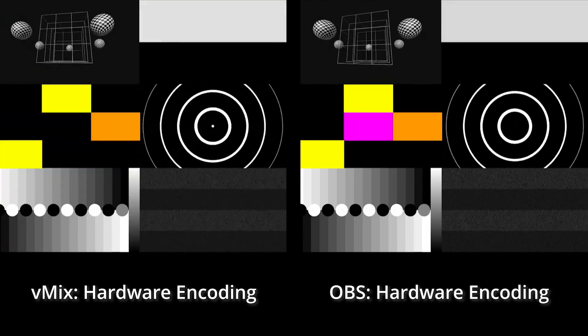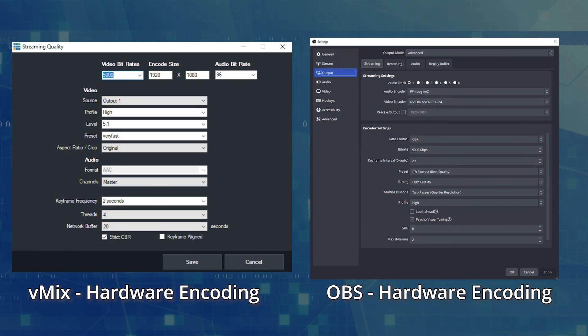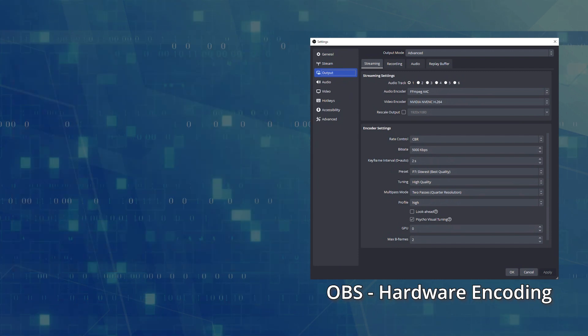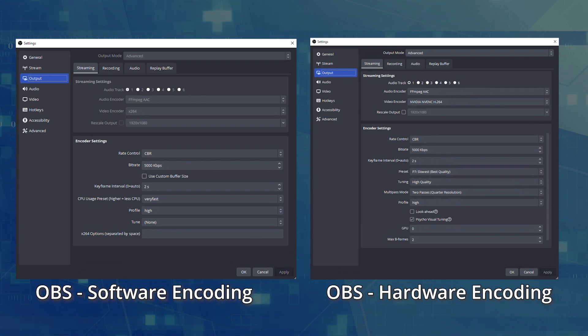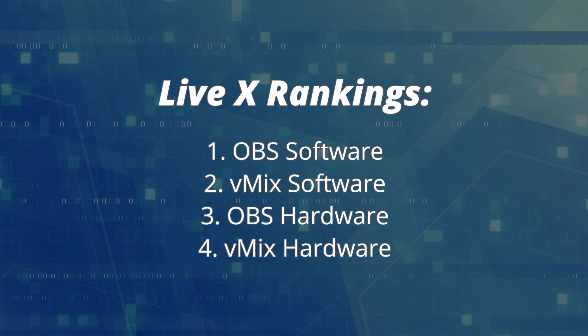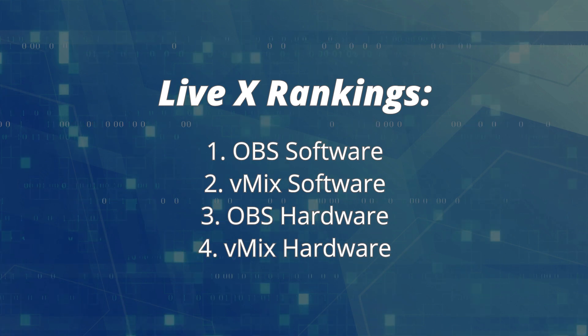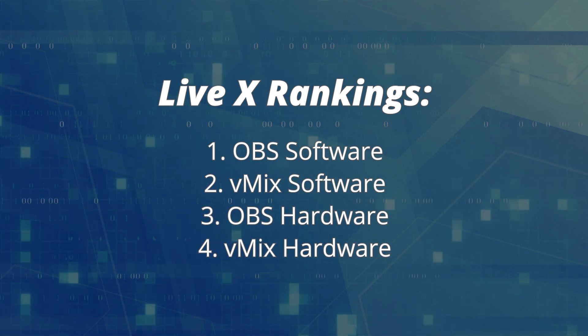It struggles with these fading color blocks on the top right. OBS looks better, and this is because I was able to tweak the NVENC encoding settings that vMix doesn't give me. For this test, I think OBS's tweaked hardware encoding looked almost as good as its vanilla software encoding most of the time, and you might notice no difference or even prefer hardware for your use case. Our viewers at LiveX put OBS software encoding at the top, with vMix software encoding very slightly below it. Then I would put OBS hardware encoding and vMix hardware encoding in last.